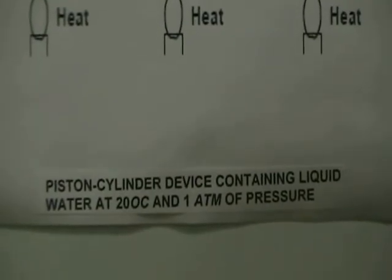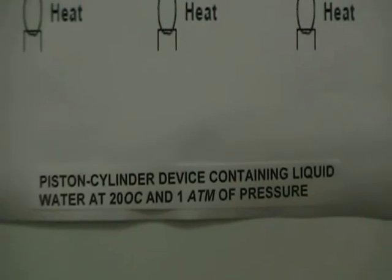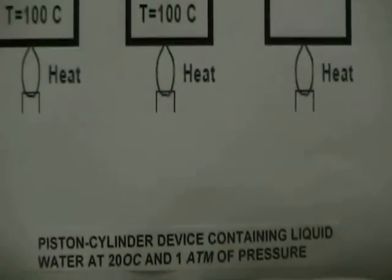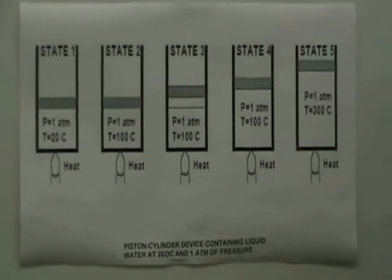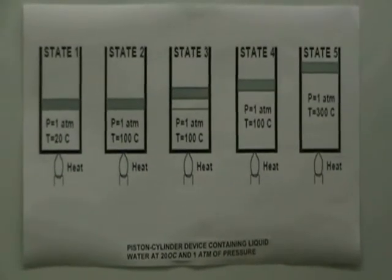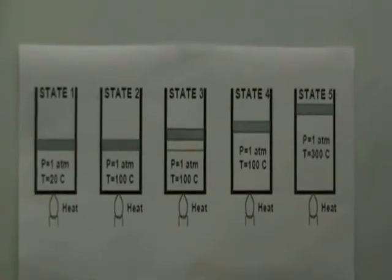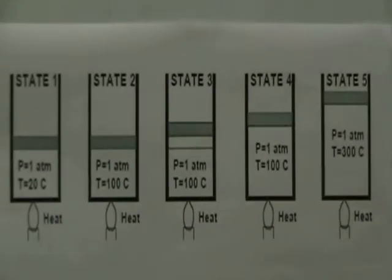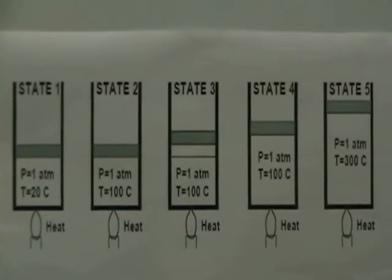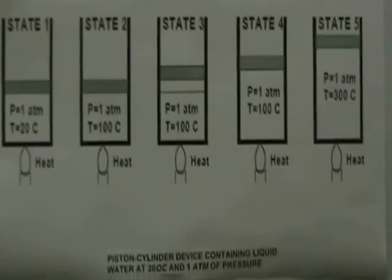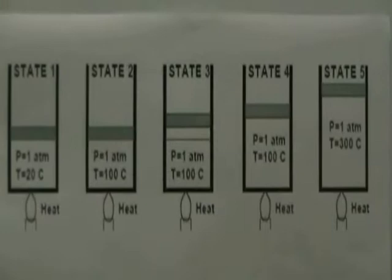In the first phase of the presentation, I would now like to explain phase changes in order for you to gain a better understanding. A pure substance is a substance that has a fixed chemical composition throughout and can exist in either the solid, liquid, or gaseous phase. To gain a better understanding of the phase change process, we are now going to use a piston cylinder device containing water at 20 degrees Celsius and 1 atm, as shown in the figure illustrated here.